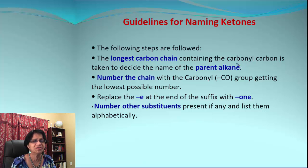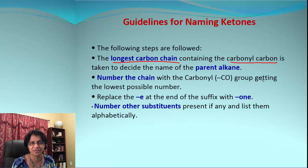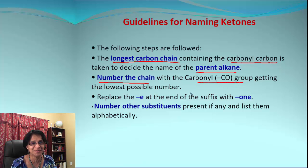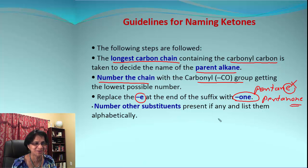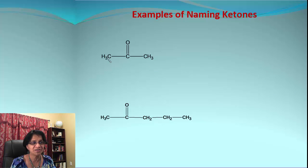Naming ketones is similar to aldehydes with a small difference. First, find the longest carbon chain containing the ketone carbonyl atom and get the parent alkane name. Then number the chain so the carbonyl group gets the lowest possible number. Replace the final 'e' with 'one' — for example, a five-carbon chain becomes pentanone. Indicate the position of the carbonyl and include any substituents with their corresponding numbers.